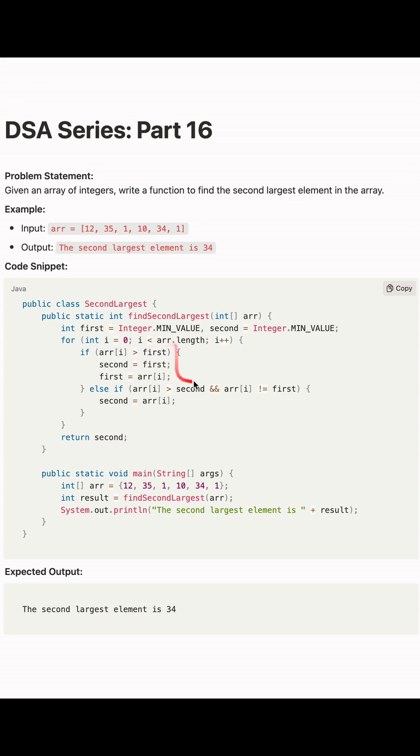For the for loop, what we're doing is updating the first and second based on the current element in the array. In the iteration, we start from i equals 0 till i length.